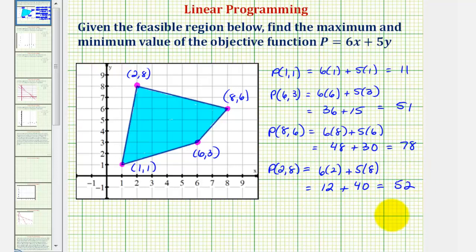So the largest value is the maximum of the objective function, and the smallest value is the minimum of the objective function.